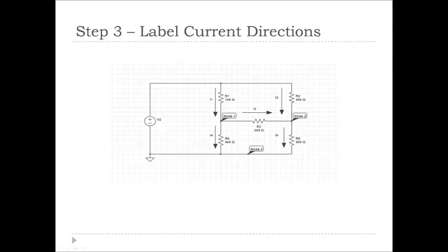The third step in nodal analysis is labelling our current directions. For currents like I3, which we're unsure which way they're going to flow, it doesn't really matter which way we draw them just so long as we keep them constant through all our calculations.